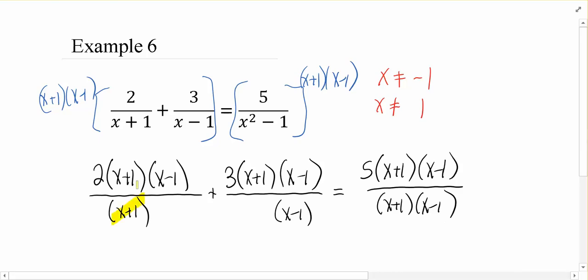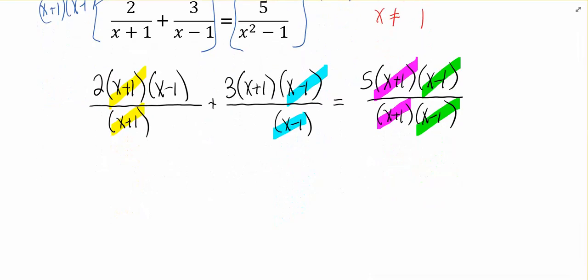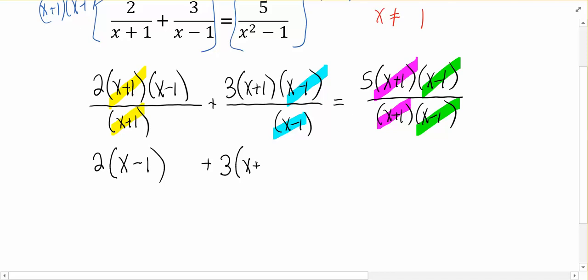And so now we're going to say I have an x plus 1 over an x plus 1. Those guys divide out. I've got an x minus 1 over an x minus 1. Those guys divide out. I've got an x plus 1 over an x plus 1. They divide out. I've got an x minus 1 over an x minus 1. They divide out. So all I'm left with from the first fraction is a 2 and an x minus 1. From the second fraction, the 3 and the x plus 1. And on the right-hand side, just left with 5.